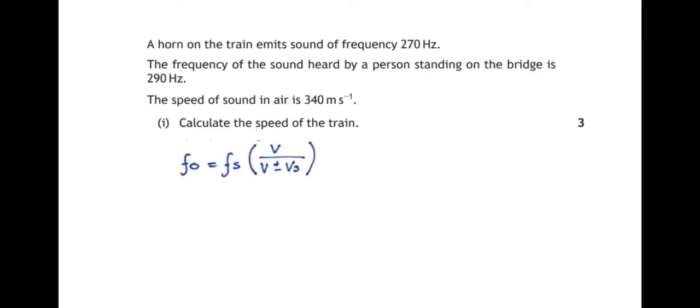So the formula for the Doppler effect is this: FO equals FS times V over V plus or minus VS.